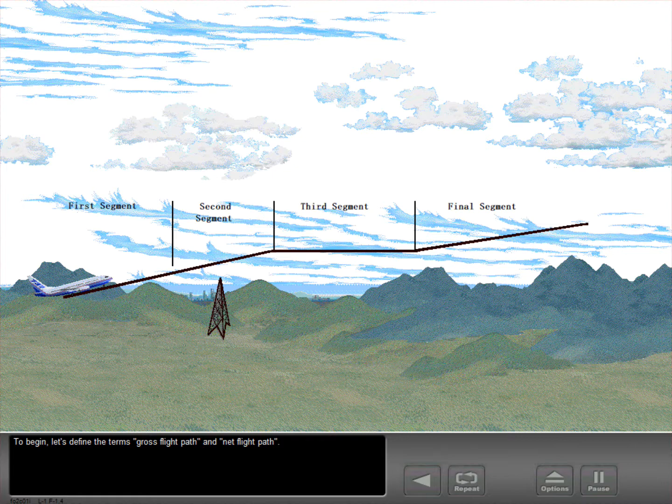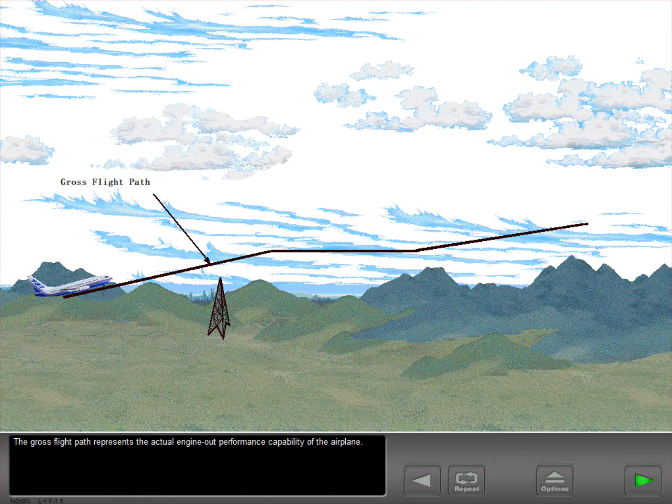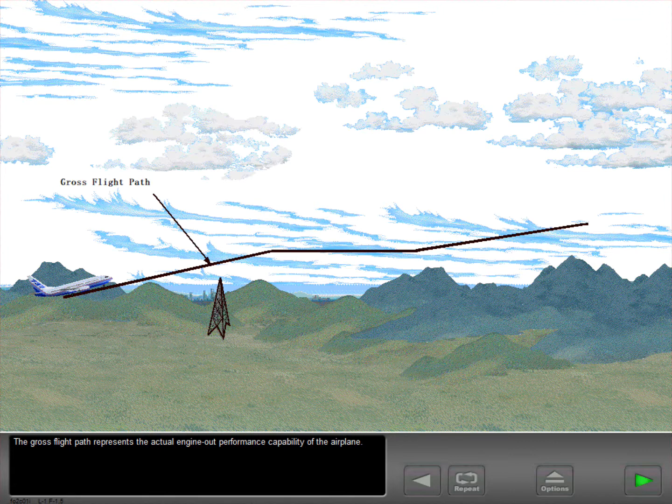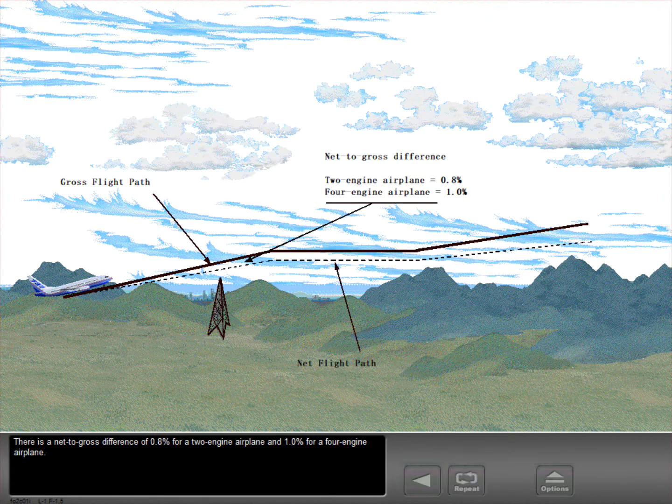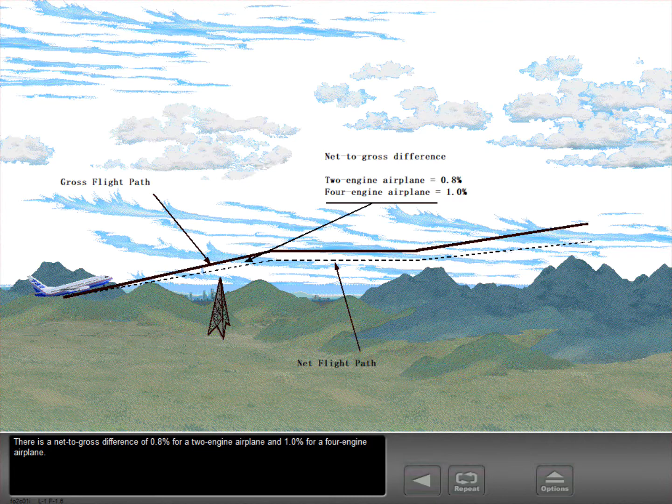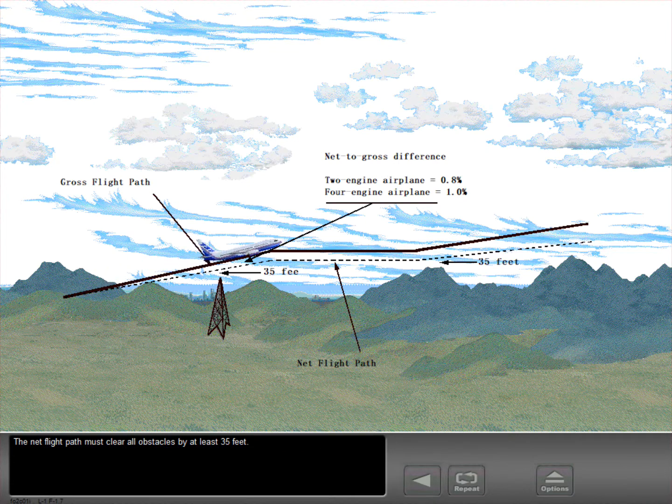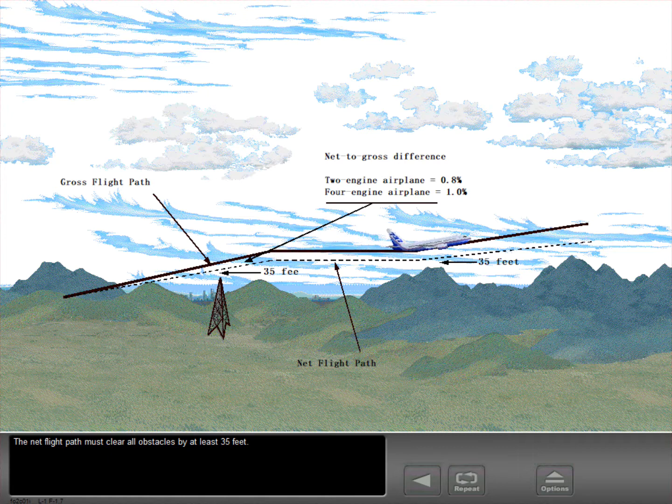To begin, let's define the terms gross flight path and net flight path. The gross flight path represents the actual engine out performance capability of the airplane. There is a net to gross difference of 0.8% for a two-engine airplane and 1% for a four-engine airplane. The net flight path must clear all obstacles by at least 35 feet.